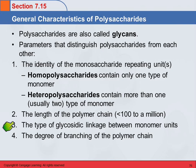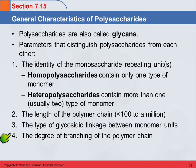Another important factor is the type of glycosidic linkage between monomer units, and we'll see that the type of glycosidic linkage is pretty important. Also important is the degree of branching — some of these are straight chains, some have branches, some have a little bit of branching, and some have a lot of branching.